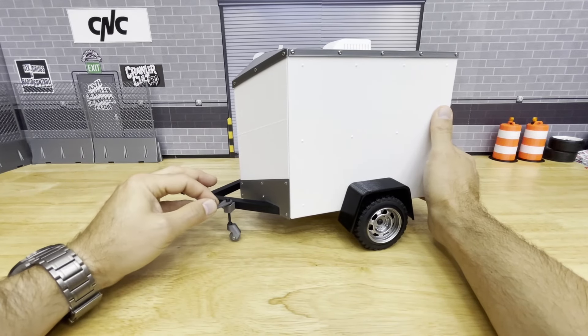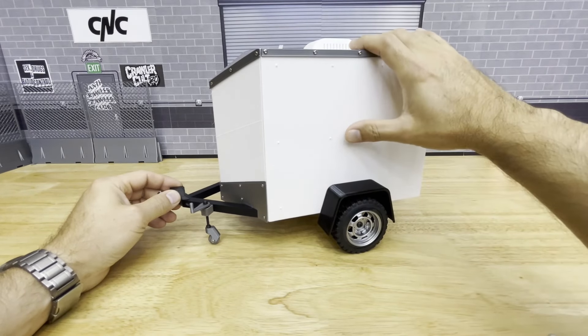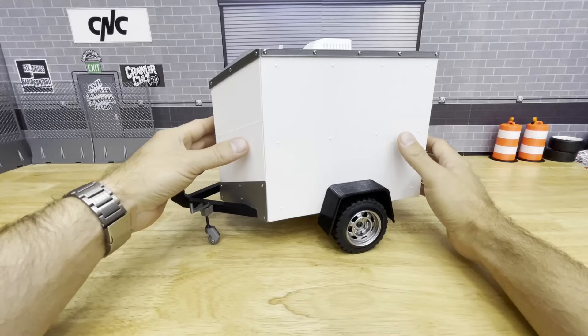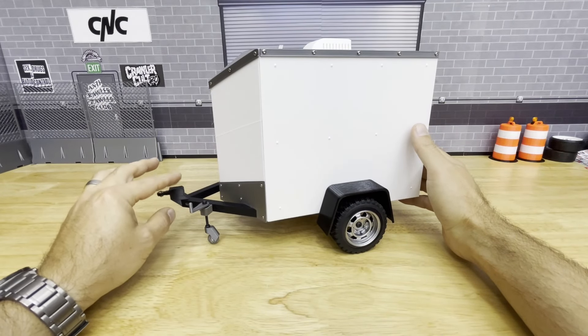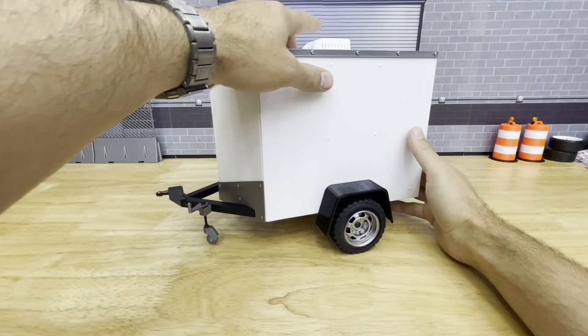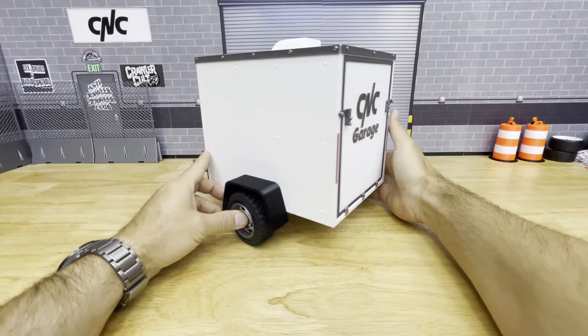You can see there's a working wheel jack here and basically this box is one print, the nose is one print, and then you have the trim items, basically the frame. You can do a couple different options on the top of the trailer. Let's turn around and take a look at the back.